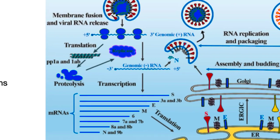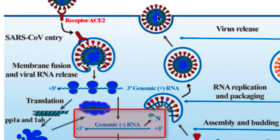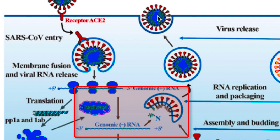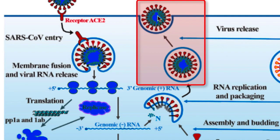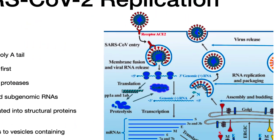Full-length RNA and nucleocapsid protein then bind to vesicles containing viral envelope proteins; N, M, and E facilitate this interaction. The fully-formed virion then exits the cell by exocytosis.